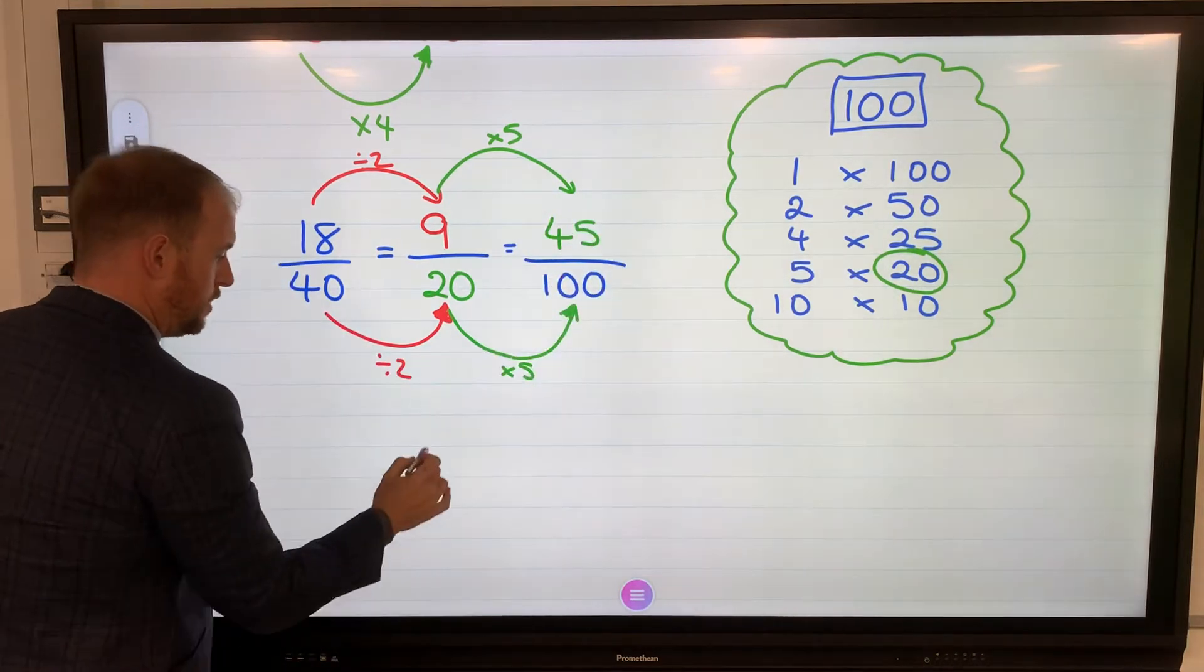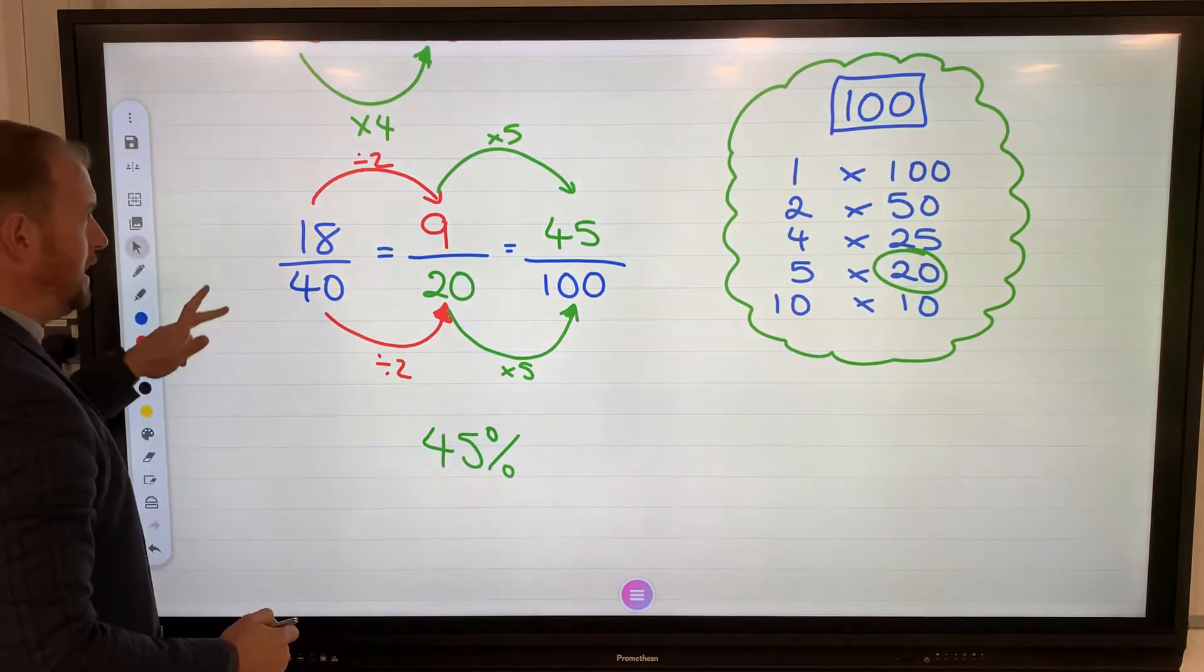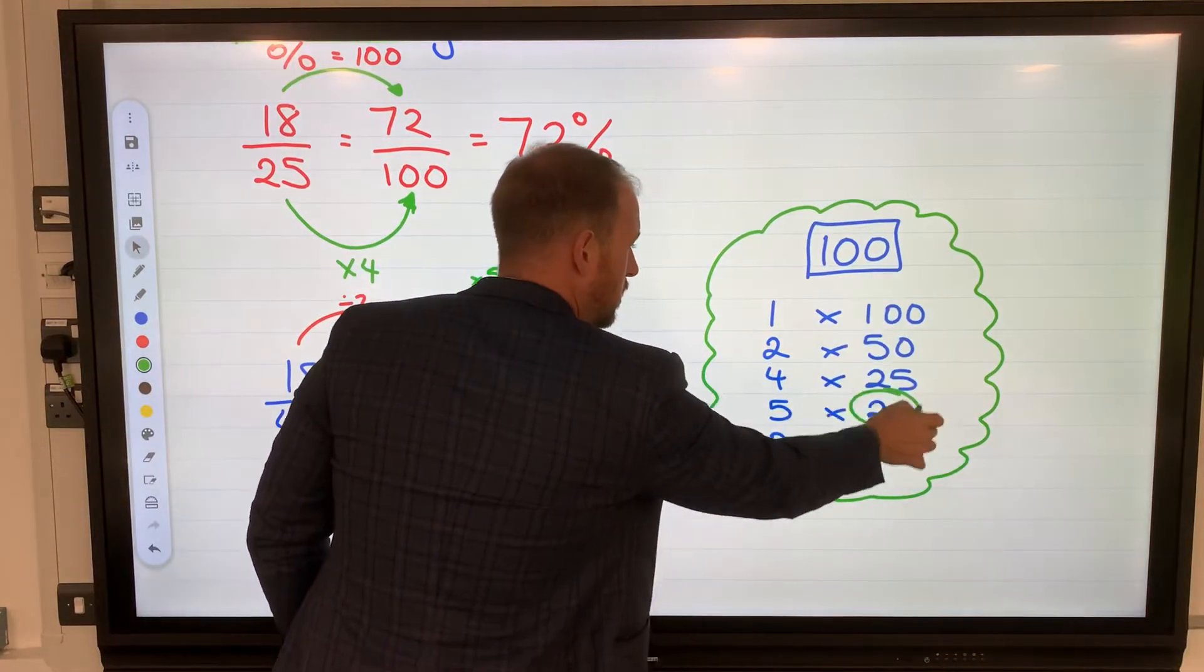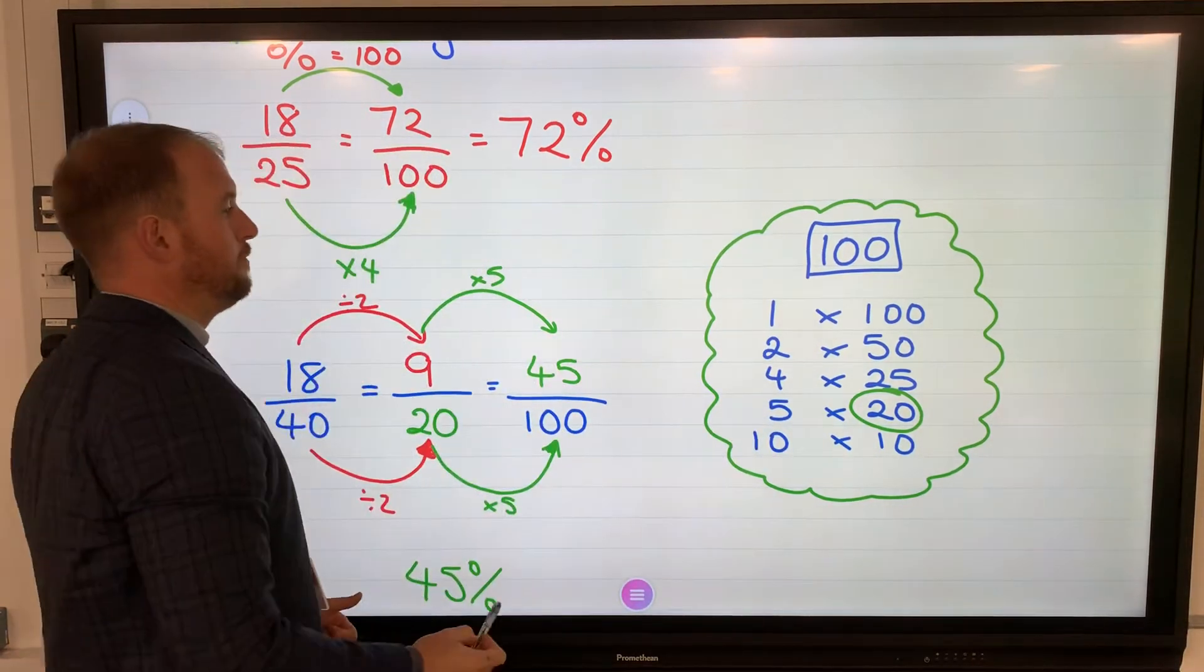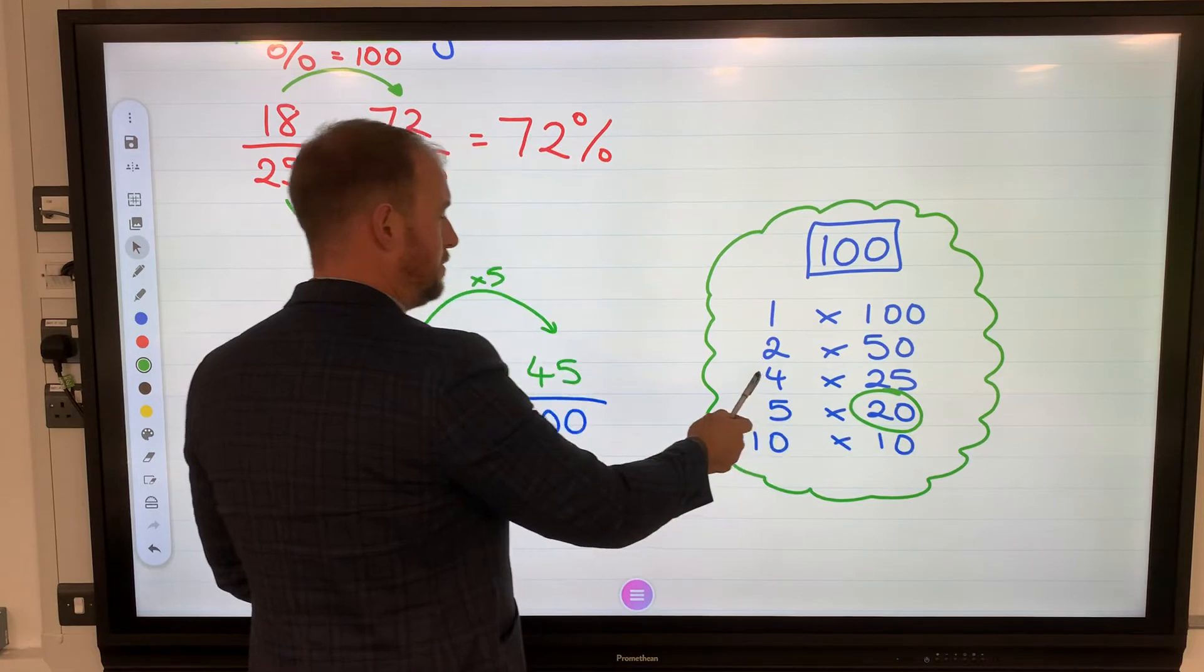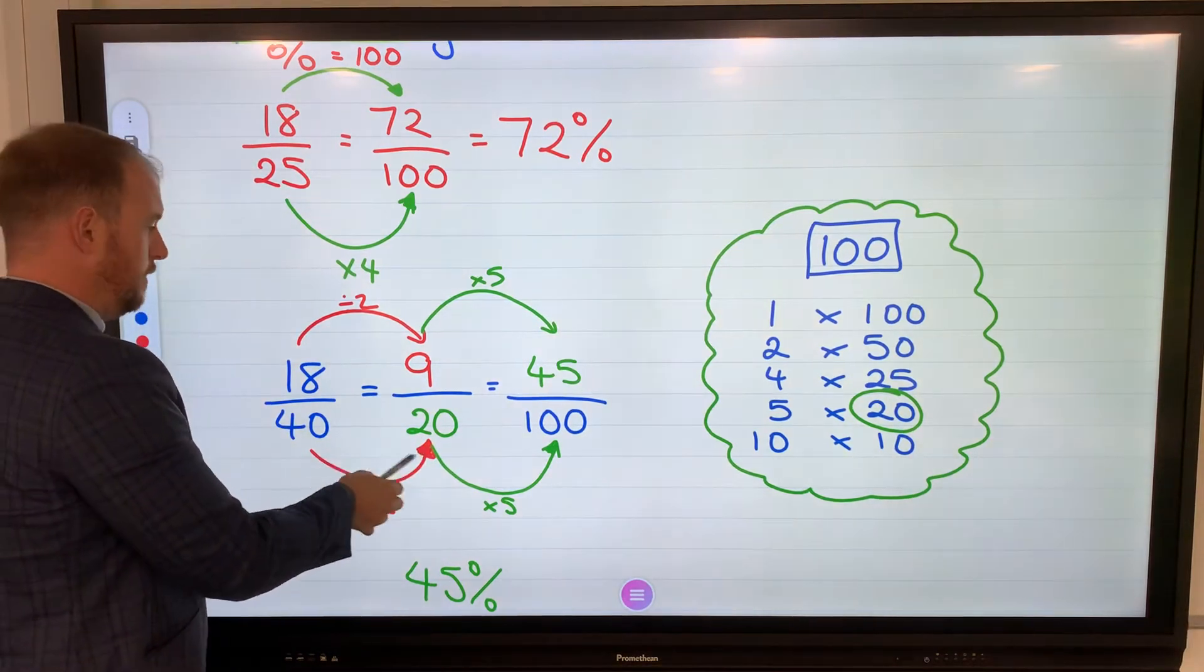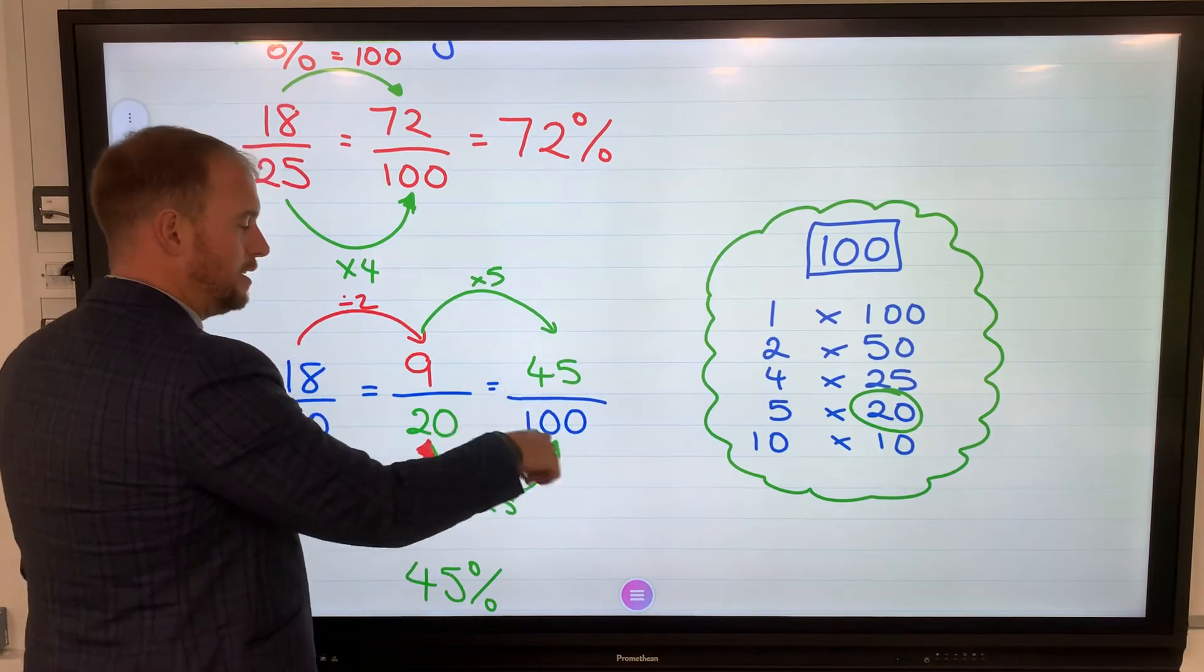45 out of 100 is 45%. So if it's an easier question, where it's out of 25, if it's out of any of these numbers, then we know it's very easy, just times them by these numbers here. As I said earlier, if it's out of 50, times it by 2. Out of 25, times it by 4. But if it's something difficult, like 40,